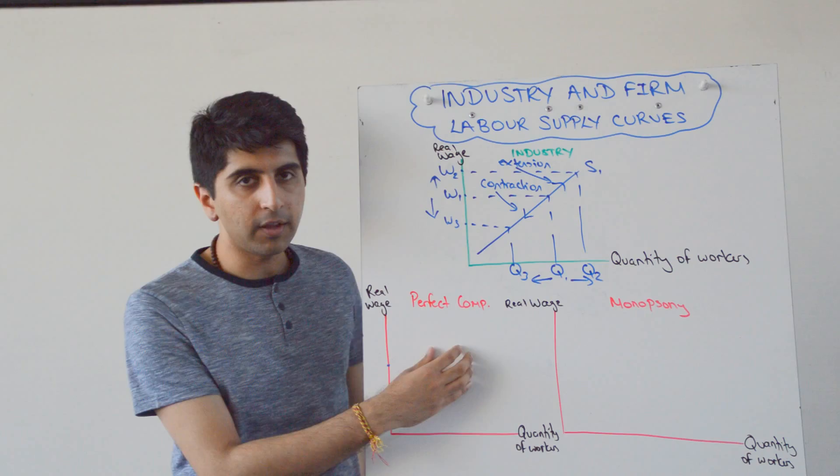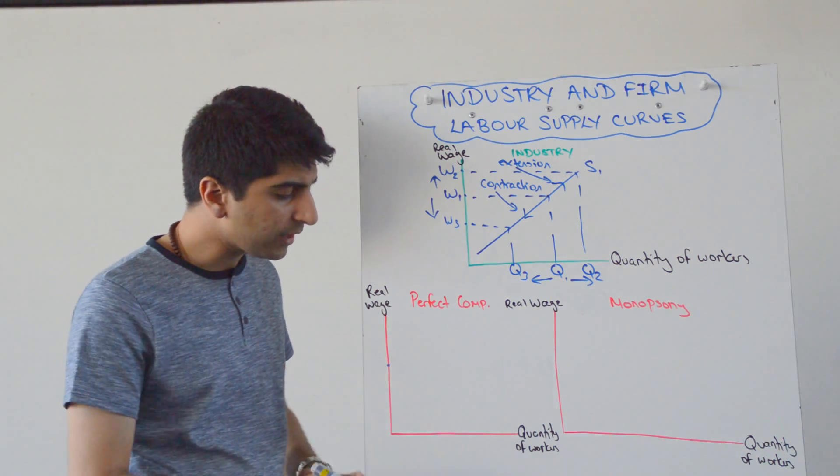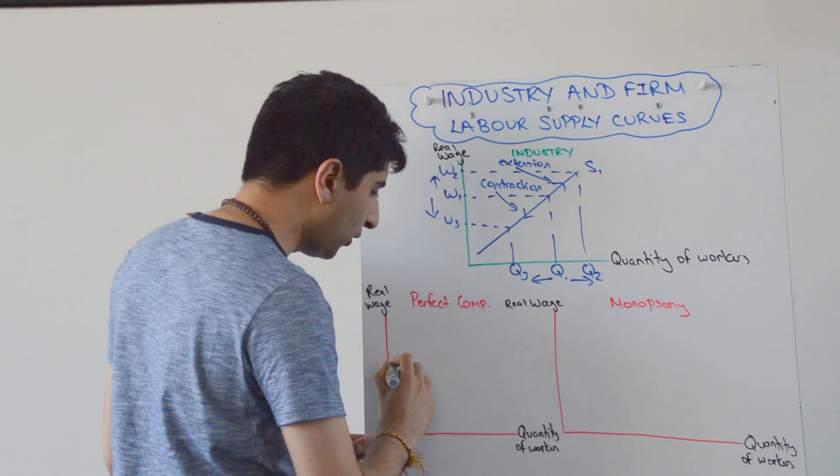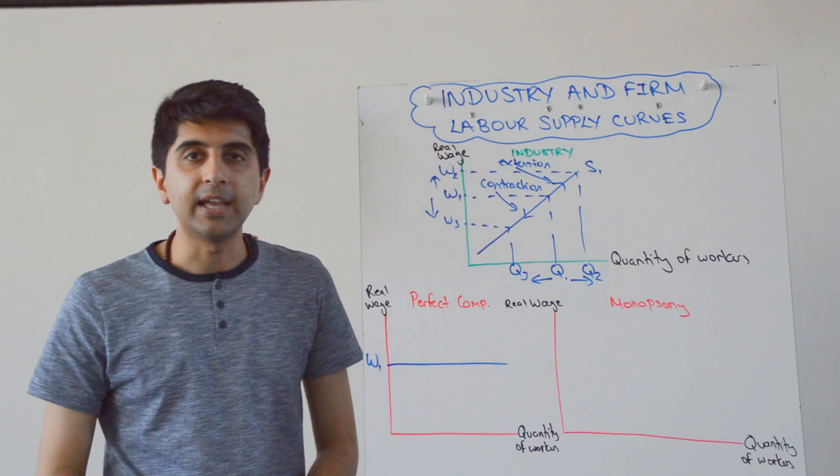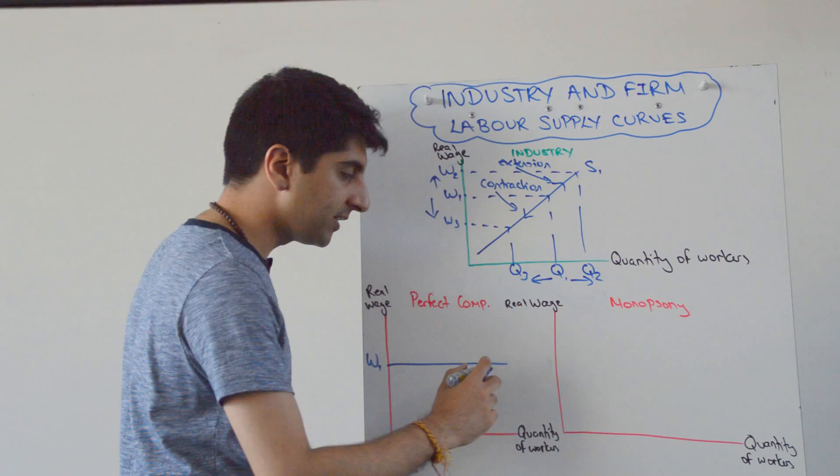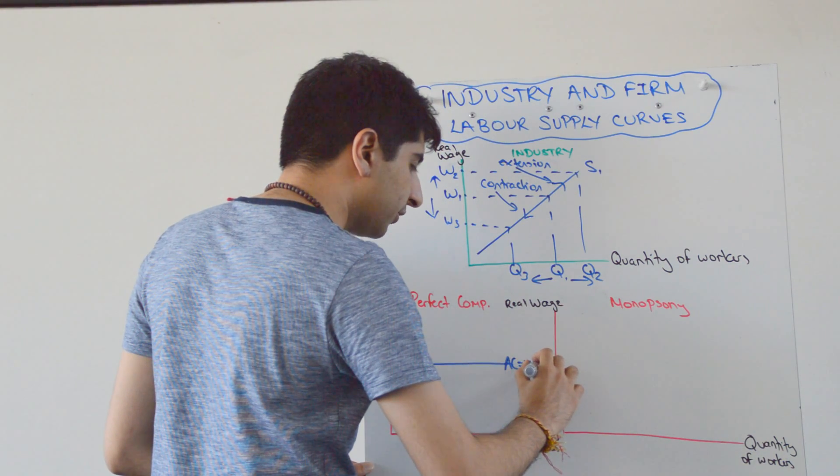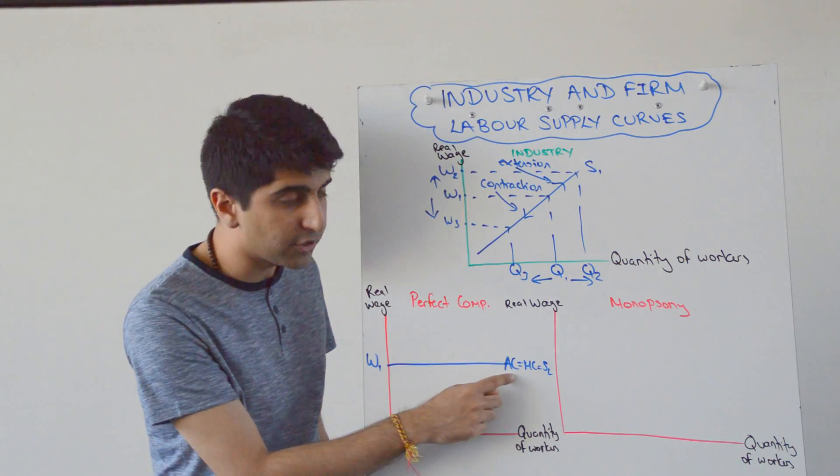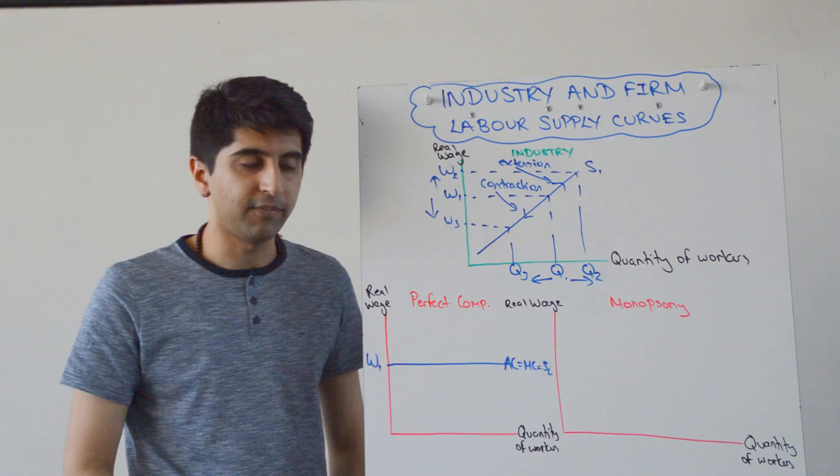Well, their labour supply curves will depend on the kind of labour market they're operating in. So if you've got firms that are operating in a perfectly competitive labour market, then they are wage takers. So for them, they have no control over the wage that they can actually provide for their workers. They are wage takers. As a result of that, their average cost is going to equal their marginal cost, which is going to equal their supply of labour. So the average cost of labour equals the marginal cost of labour, which equals the supply of labour.